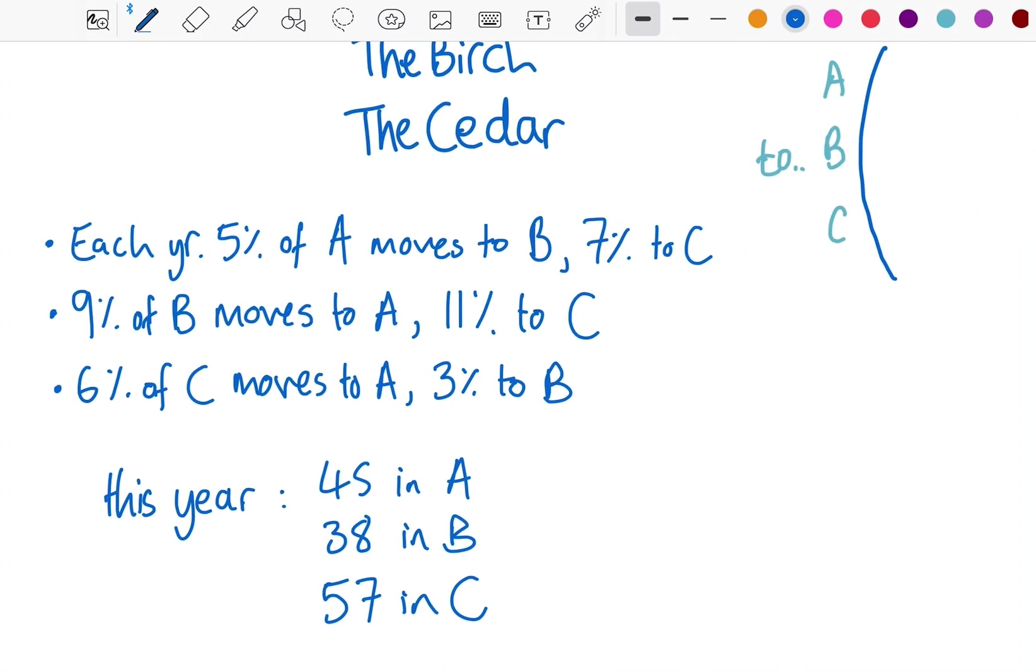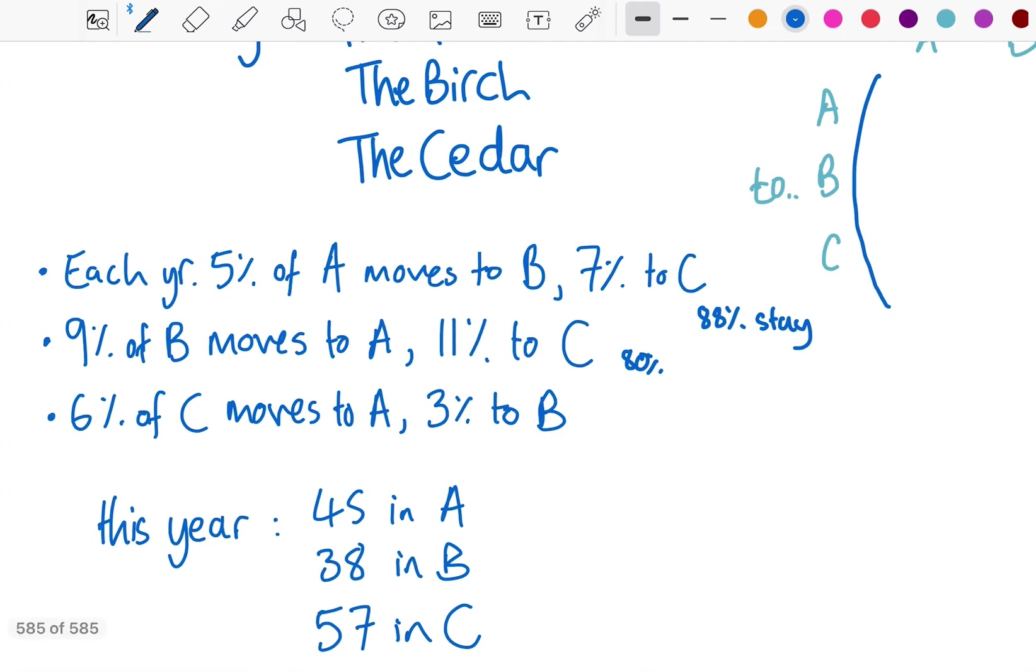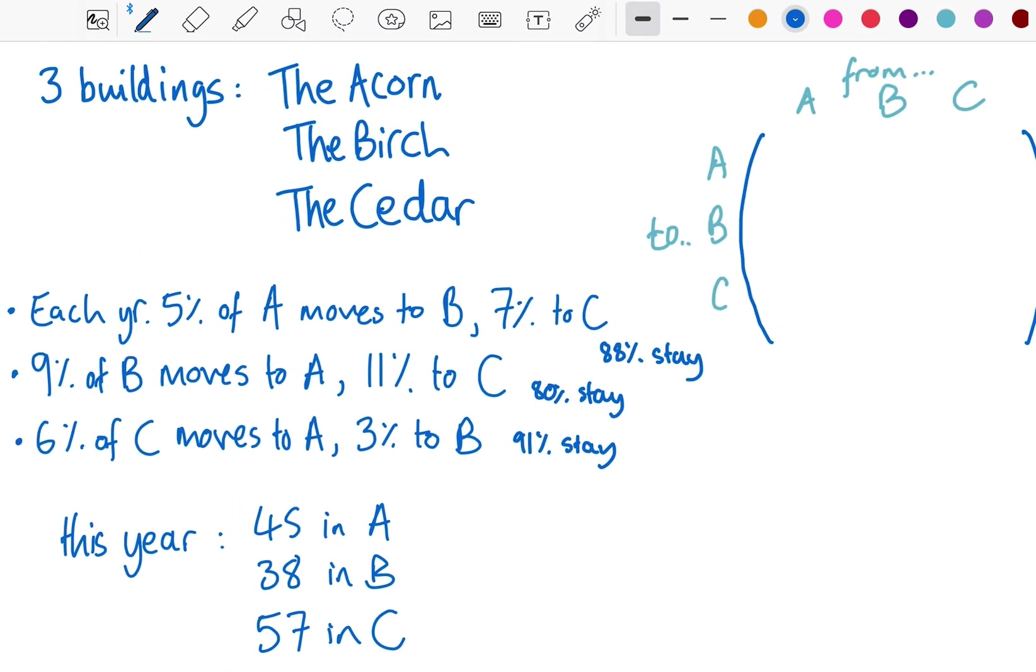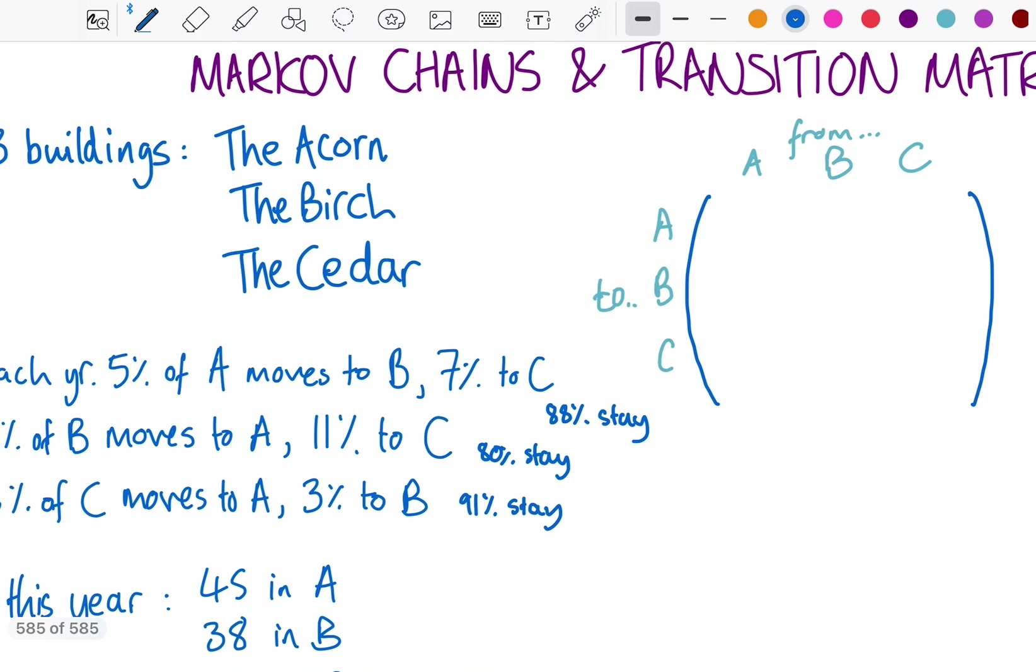Implied in each of those that you may have to figure out yourself is that 88% of people stay in A if they're in A, 80% stay in B if they're in B, and 91% would stay in C. So that could be something you would have to work out yourself, just from understanding the context of the question. Now, having those three long bullet points isn't particularly helpful.